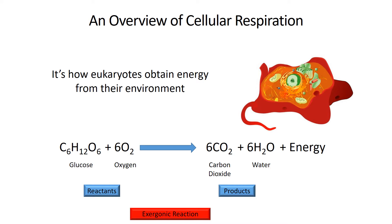During cellular respiration, as we break down glucose into carbon dioxide and water, most of the energy in glucose is going to be lost to the environment. However, through all the different stages of cellular respiration, some of that energy is going to get transferred to make ATP — that's the energy currency of the cell.